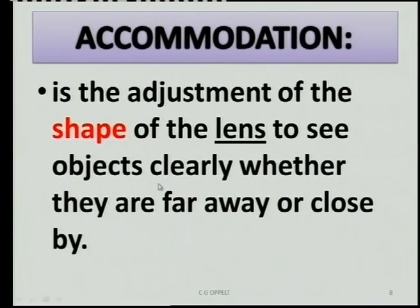Let's start with accommodation. First of all, you have to know a definition. Accommodation has to do with the shape of the lens. Many books point out that it is the adjustment of the eye, but to be quite safe, please make sure that you talk about the adjustment of the lens — because it's the shape or thickness of the lens that has to change. Accommodation is about changes in the lens that enable you to see a clear picture from a distance or close by.